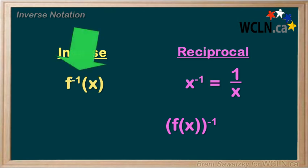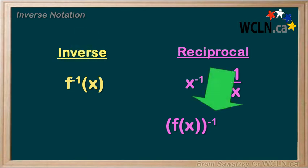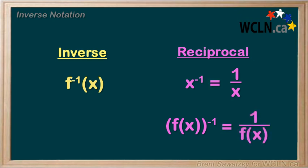In this first case, the placement of that negative 1 indicates an inverse. In this second case, we recognize that this is a reciprocal or could be written as 1 over f in terms of x.